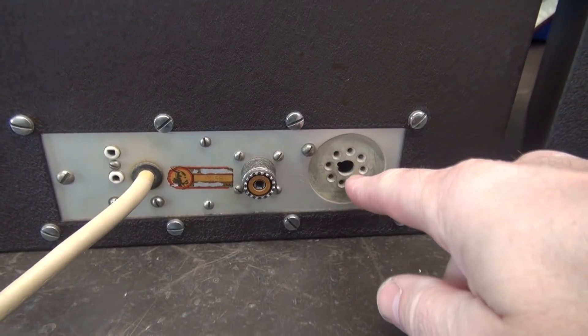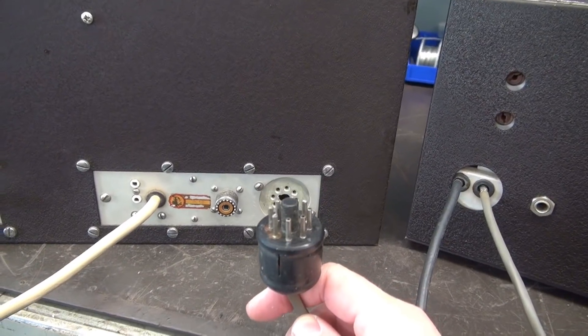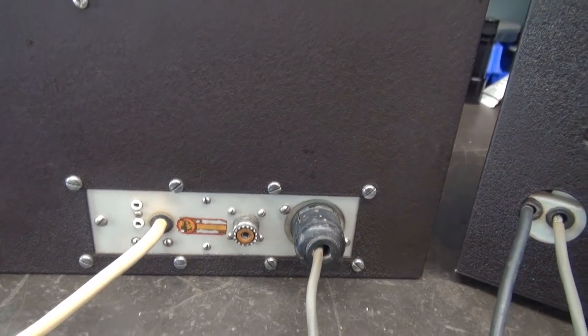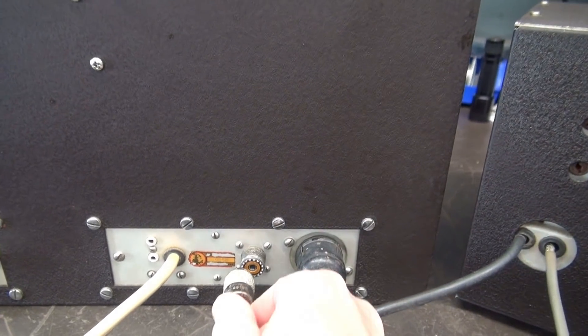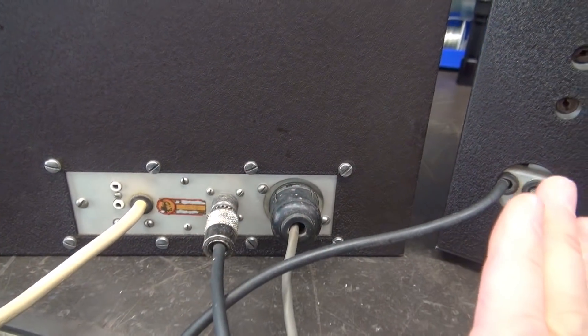Next to the VFO input jack is this octal plug. So if you have your VFO 122, this is the plug that simply goes in there and then you take your SO-239 and you spin it on.